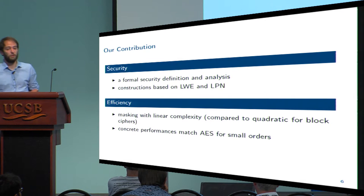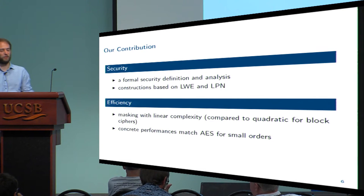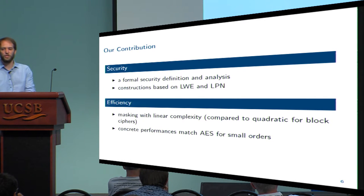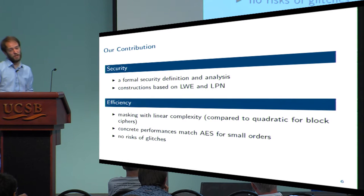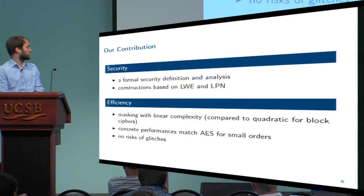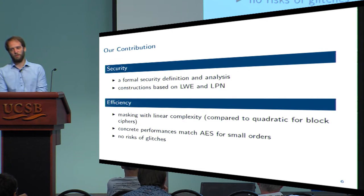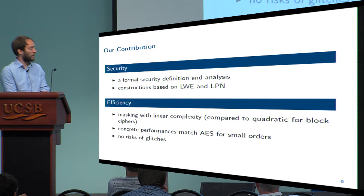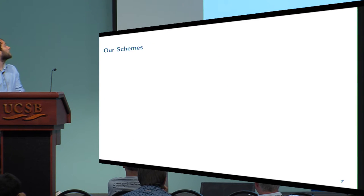We have also provided a concrete implementation for the scheme. It shows that even for low orders, or a low amount of shares, we match the efficiency of masked AES. And since it's asymptotically more efficient, we of course have better efficiency for higher orders. The nice thing is also that we have security against so-called glitches for free, which was not the case for the AES implementations used for comparison. If you want AES implementations secure against glitches, you have a much higher computational overhead — several magnitudes less efficient compared to our solution.